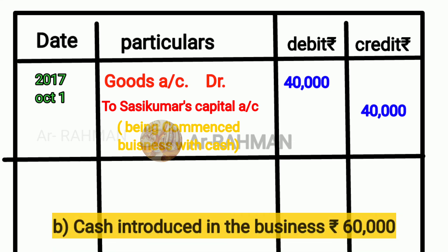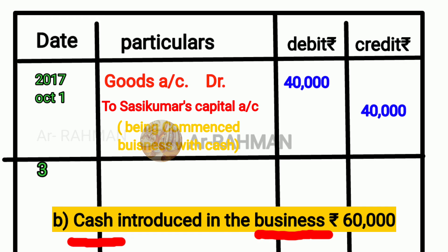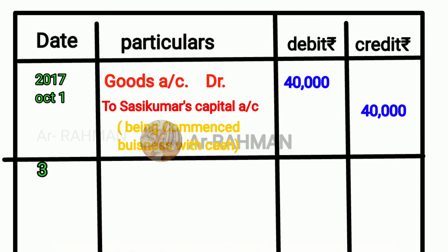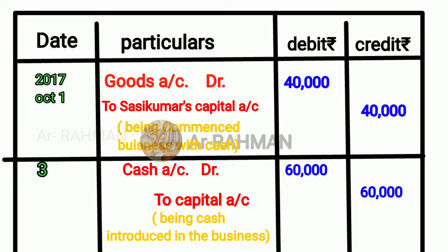Next question: cash introduced in the business for Rs.60,000. So Rs.60,000 value in cash introduced in the business — this is capital. The date posted is 1-3. Debit what comes in, credit what goes out — real account. Cash account and business: capital is introduced in the business. So cash account Dr to capital account Rs.60,000. Narration: being cash introduced in the business.